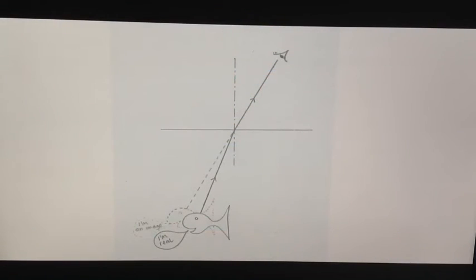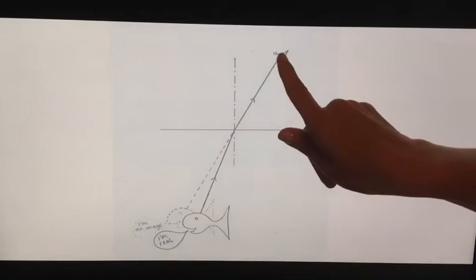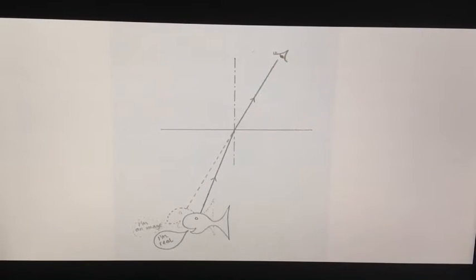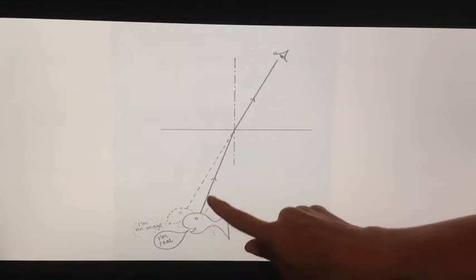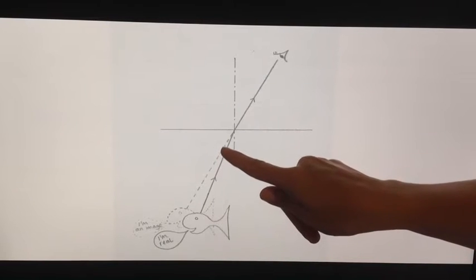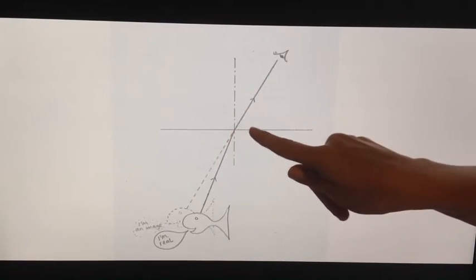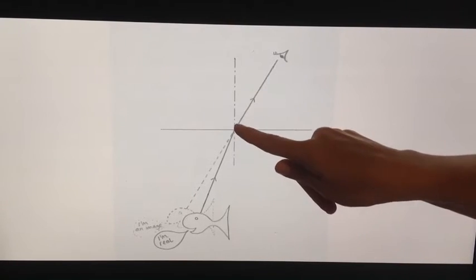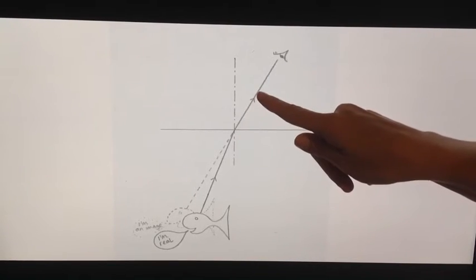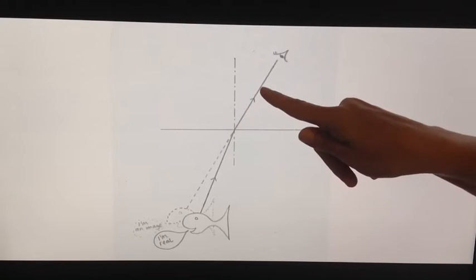We see the fish because the light travels from the fish to our eyes. The light is travelling through water here, so it will be travelling at about 225 million metres per second. And then it will speed up once it's reached this boundary into the air. It will speed up here to around, well just under 300 million metres per second.